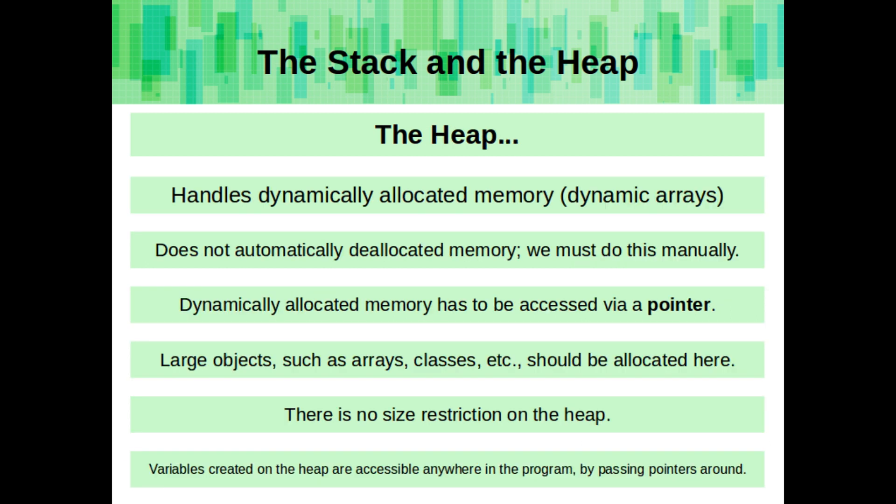Now with the heap on the other hand, the heap handles dynamically allocated memory, so dynamic arrays are just variables that we create dynamically. It does not automatically deallocate this memory, we must do it manually. That's why we use the new and delete keywords. Dynamically allocated memory has to be accessed via a pointer.